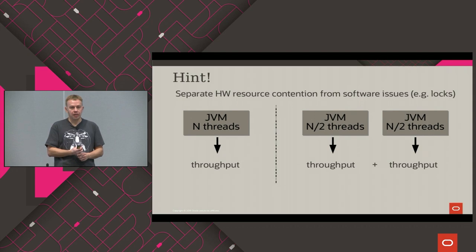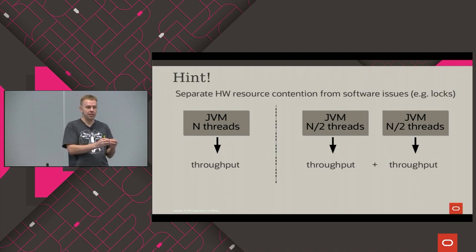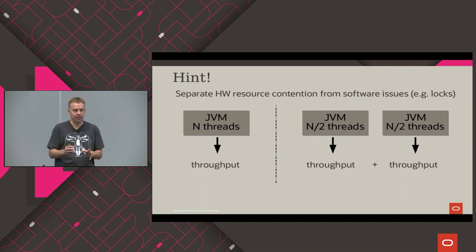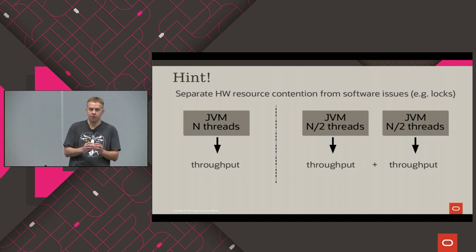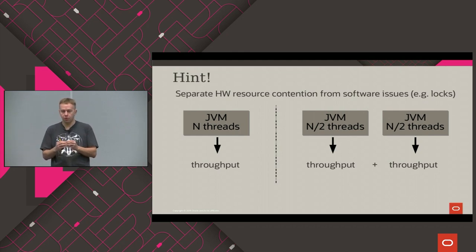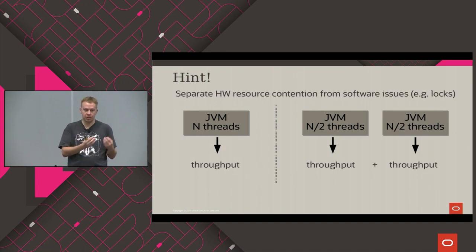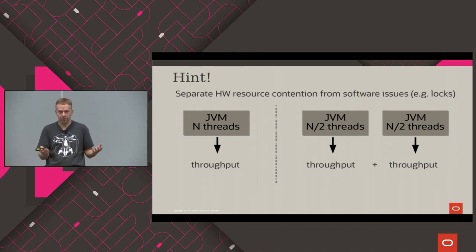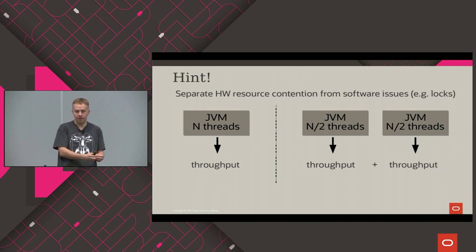The key question when dealing with scalability is: what's causing it? Is it resource contention, hardware resource problems, or application synchronization issues? Here's an easy hint: if you can split your application into two JVMs with half the threads each, and the cumulative throughput of two executions is larger than with a single execution, it means you have software problems. Two different JVMs don't interfere with each other except at the hardware level.